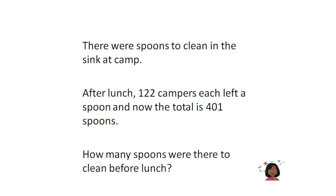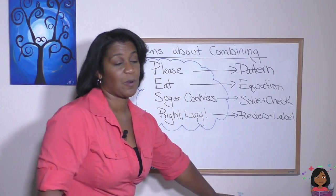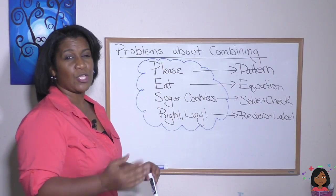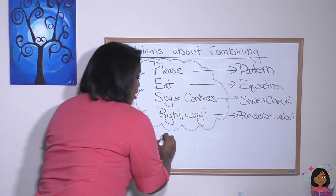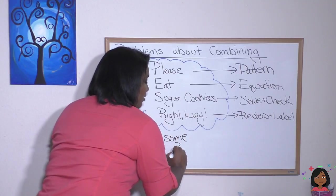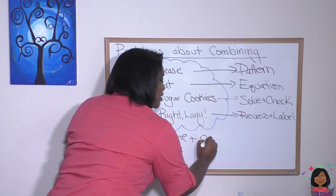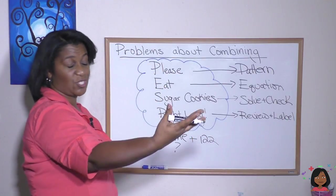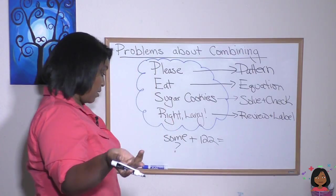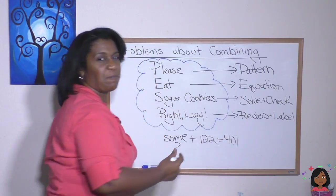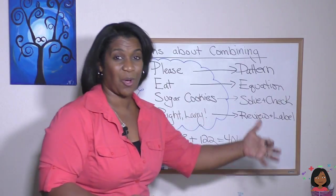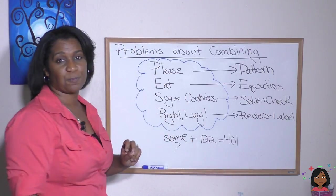There were spoons to clean in the sink at camp. After lunch, 122 campers each left a spoon. And now the total is 401 spoons. How many spoons were there to clean before lunch? Let's break it down. Let's start with please find the pattern. So there were some spoons. We don't know how many there were, but then some more came, right? There were some campers who came, 122 campers. And then there was this total at the end of 401. So what kind of pattern is that? Some plus some more equals the total is an addition pattern. So that's the first part. The P is for pattern.